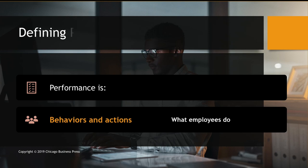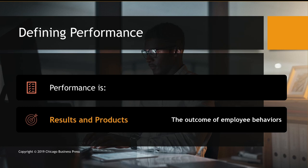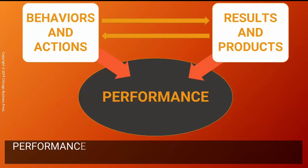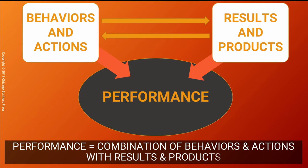Defining performance is a little bit tricky. Performance is about behaviors and actions — what employees do — and also about results and products, which is the outcome of employee behavior. So behaviors and actions together with results and products yield a level of performance. Performance can be defined through the behaviors and actions of employees along with the results and products.